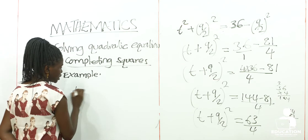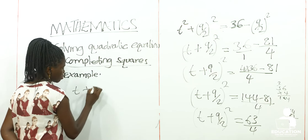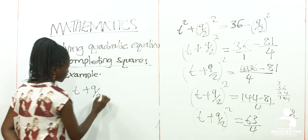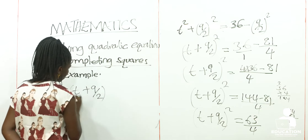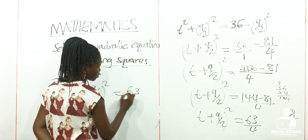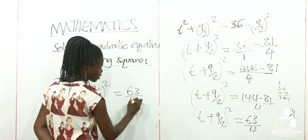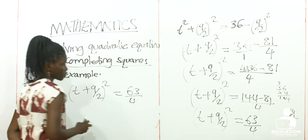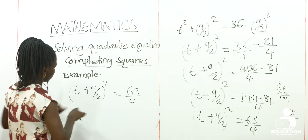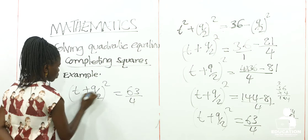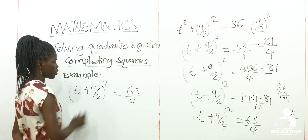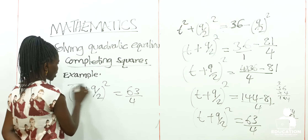We are now going to have (t + 9/2)² is equal to 63 over 4. We are now going to introduce square root signs on both sides to get rid of the square sign.